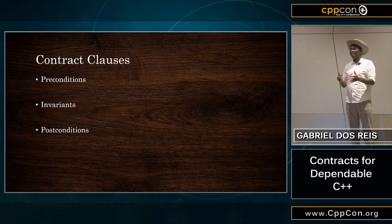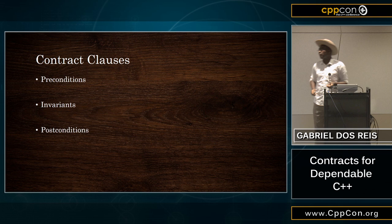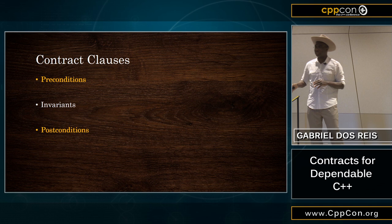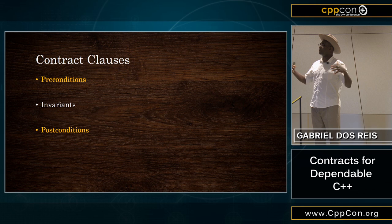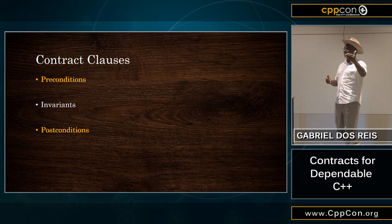For example, if you have a polymorphic class and create an object of that class, you know at point of construction what the dynamic type of that object is. An invariant is that the dynamic type of that object will not change during the lifetime of the object — between construction and destruction, the vtable doesn't change. In this talk, I will talk only about preconditions and postconditions, mostly because invariants fall out from the rest. The most important aspects are preconditions and postconditions — when you get those two, invariants kind of follow.